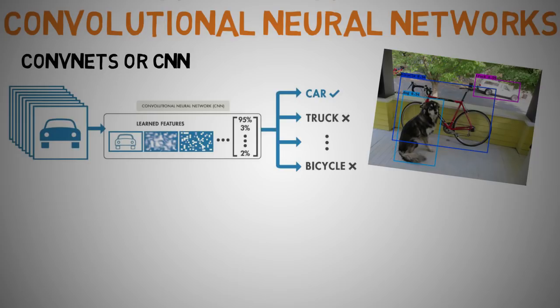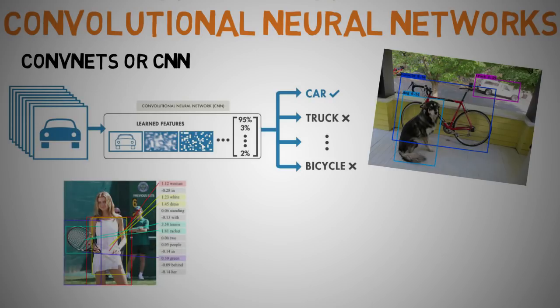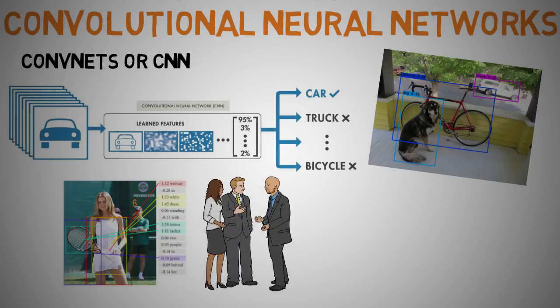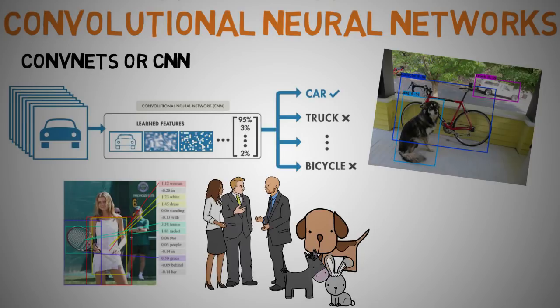Convnets are very successful in identifying faces, objects, and traffic signs, apart from powering vision in robots and self-driving cars. A convent is able to recognize scenes and suggest relevant captions, for example a girl playing tennis. This image shows an example of a CNN being used for recognizing everyday objects such as humans, objects and animals. There are also convnets involved in playing games such as Starcraft, Doom and Mario.